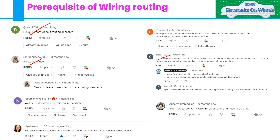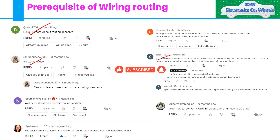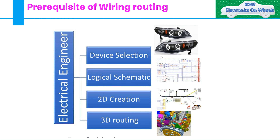We are going to come with this video. Before going to the 3D tool, we will understand the prerequisites in wiring harness routing and the standards. As you know, an electrical engineer can play different roles: device selection, logical schematic, 2D creation, and 3D routing. Device selection and logical schematic come under system engineering.